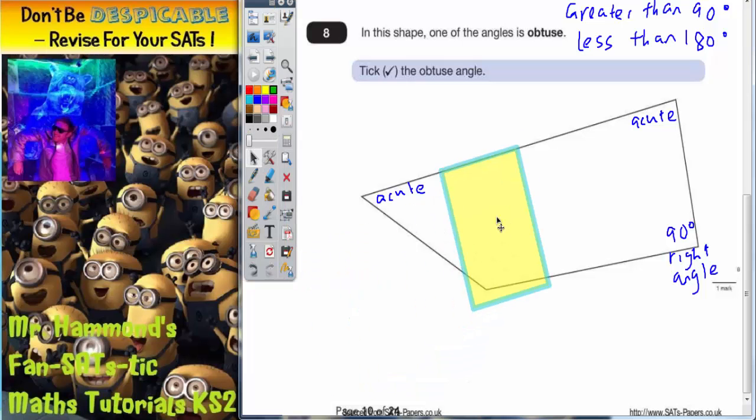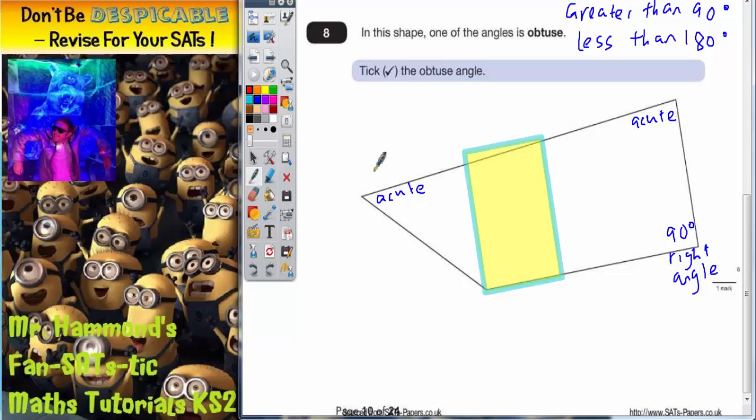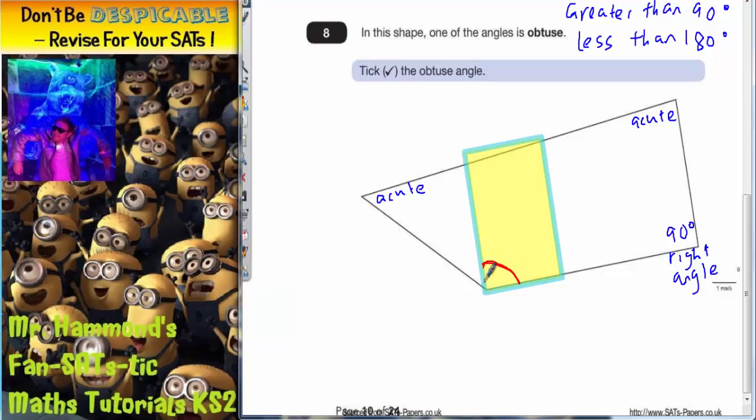But obviously we're going to check it, so let's slightly rotate that so that it fits on there like so. And you can see that if we get a pen, then this here would be the 90 degrees, but then we've also got this extra bit here. And the extra bit would take it over 90 degrees.